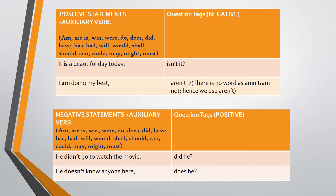Let us look at the statements that have the auxiliary verb in them. 'It is a beautiful day today.' Since this is a positive statement, the question tag needs to be in the negative — 'isn't it?' 'I am doing my best, aren't I?' There is no word such as 'am not' or 'amn't,' hence we use 'aren't.'